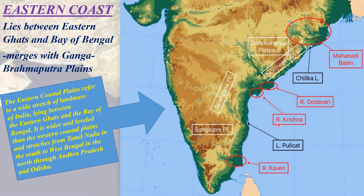The eastern coastal plains are divided into two regions: the Northern Sirkars north of the Godavari and the Coromandel coast south of the Godavari. The plain stretches across the states of Odisha, Andhra Pradesh, and Tamil Nadu. Important ports in the region include Visakhapatnam, Paradip, Chennai, and Tuticorin.